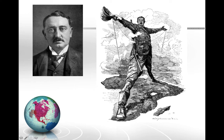Cecil Rhodes truly believed that whites were superior to Africans and that it was the job of whites to take over territory. The famous picture of him straddling Africa from Cape Town to Cairo represented his big plan — he wanted to eventually build a railroad all the way from Cape Town up to Cairo, Egypt, all through British territory. You've seen this picture before in your worksheet; now you understand what it means.